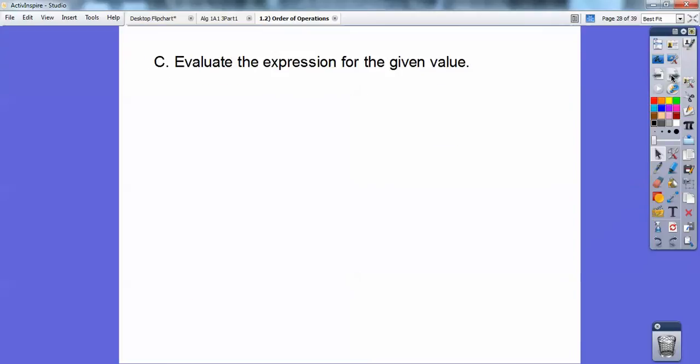All right, so evaluate the expression for the given value. Almost done. So 9x over 3 times parentheses x plus 2 when x equals 4. So I'm going to plug in x equals 4 wherever I see an x. So there's an x there, and there's an x there, so 4 goes into both those.